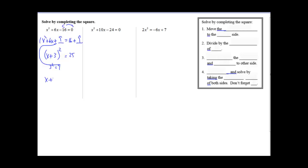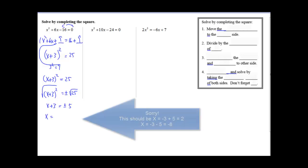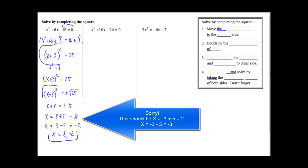Our equation is now x plus 3 squared equals 25. This goes back to the square root method: something squared equals 25, so we square root both sides, giving us plus or minus the square root of the other side. The left side becomes x plus 3 equals plus or minus 5. Moving the 3 over: negative 3 plus 5 equals 2, and negative 3 minus 5 equals negative 8. So our two roots are x equals 2 and x equals negative 8.